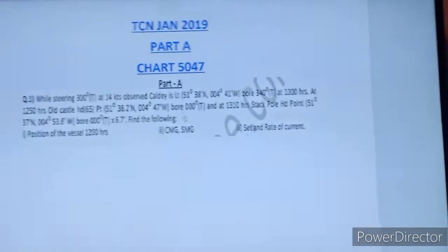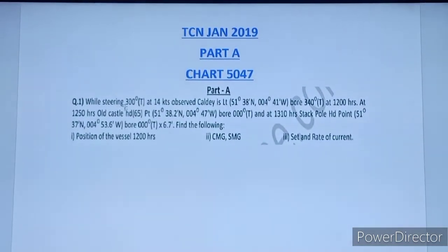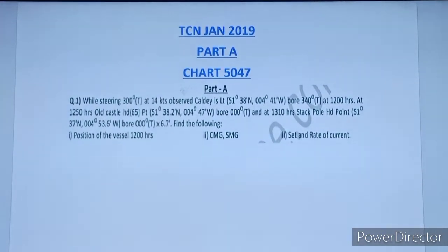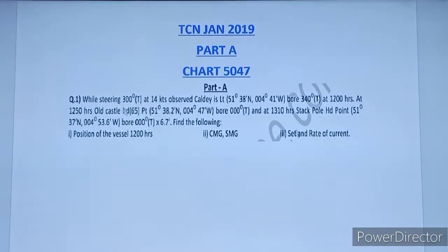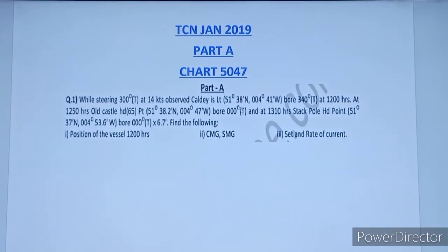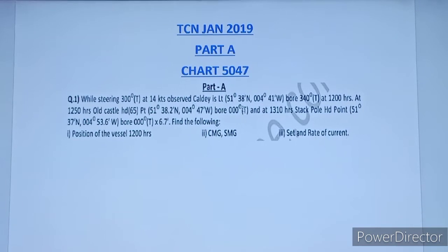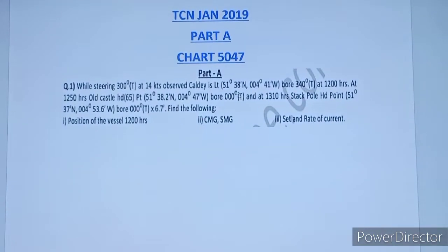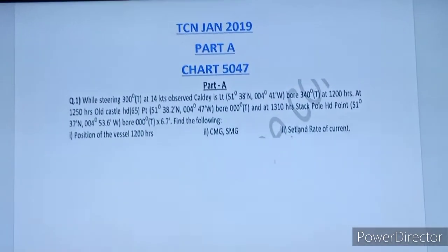So how we will approach this question — what type of question is this, what is given, and what is being asked. CTS is 300 and engine speed is 14 knots. The first lighthouse bearing is 340 at 1200 hours, the second lighthouse at 1250. So what we have: we have 3 different lighthouses, 3 different bearings, 3 different times. Plus in one bearing we have a position line and a position circle of 6.7 miles. So we will get our fix. This is a simple 3-point bearing question.